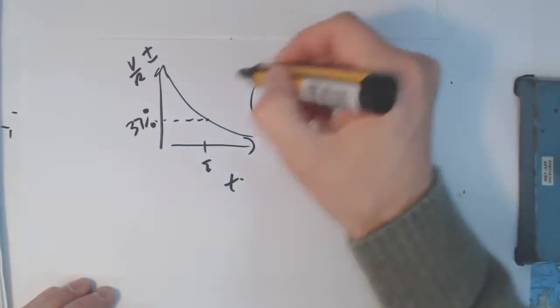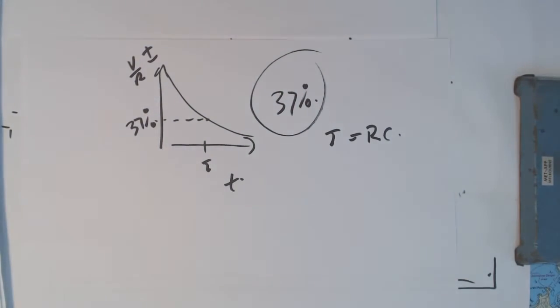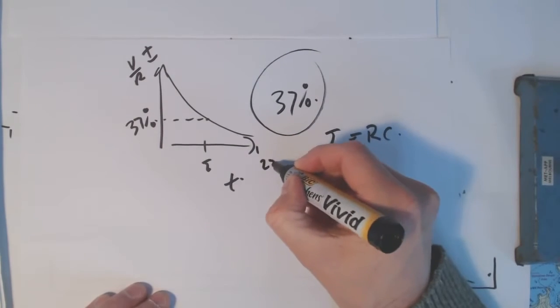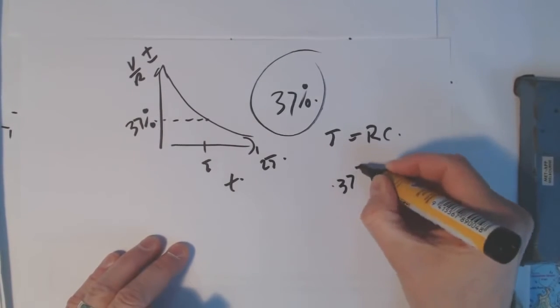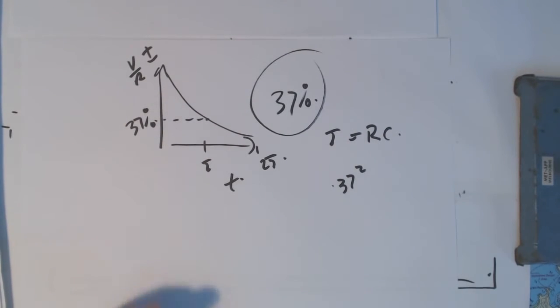Graphs that look like this, one time constant is 37%. Two time constants over here is 0.37 squared. So if we do 0.37 squared, we get 0.1369.